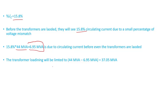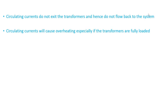This means transformer loading is limited — the combined capacity is 44 MVA, but you must subtract the capacity consumed by circulating current. The circulating currents do not exit the transformers or return to the system; they stay trapped within the transformer loop, flowing from the high side through the low side and back.